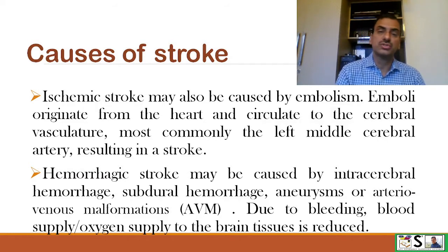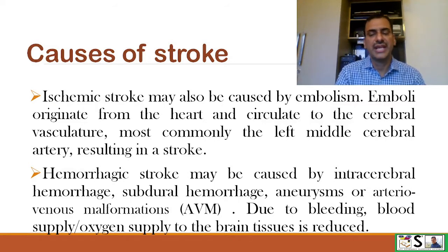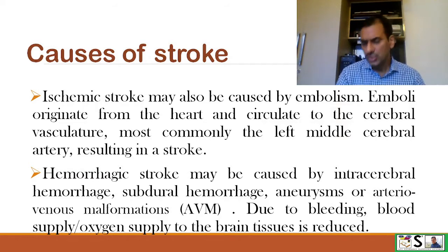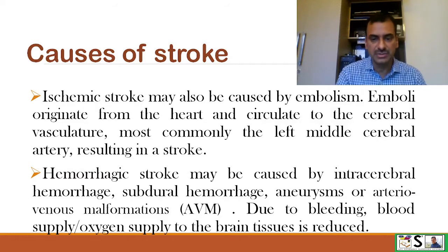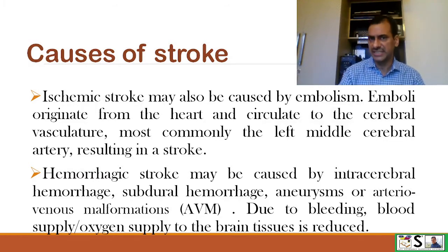Hemorrhagic stroke may be caused by intracerebral hemorrhage, subdural hemorrhage, aneurysm, or AVM — arteriovenous malformations. Due to bleeding, blood supply and oxygen supply to the brain tissue is reduced, leading to death of brain cells.